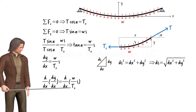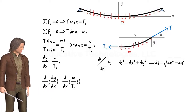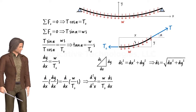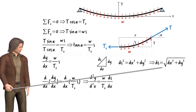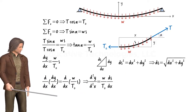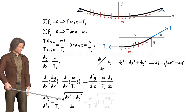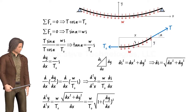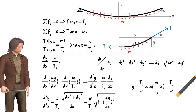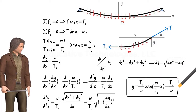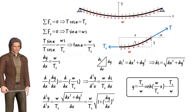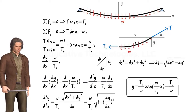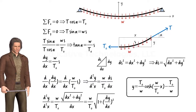Since W and T0 are constant, the right side of the equation simplifies. Substituting this term for dS, the equation becomes a second-order differential equation. When solved, this second-order differential equation yields the function that describes the shape of the cable suspended under its own weight. This is not a parabola — it is a transcendental equation called a catenary.